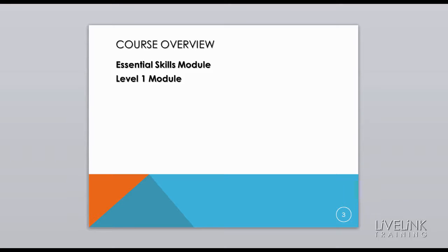Level 1 will get you off the ground using the tools and skills learned in the Essential Knowledge module and understanding how to combine them together to correct and enhance your images. Once in the air, we'll follow this up with more challenging tasks in Level 2, where we'll get you up to cruising altitude creating all manner of multi-layer composite images.